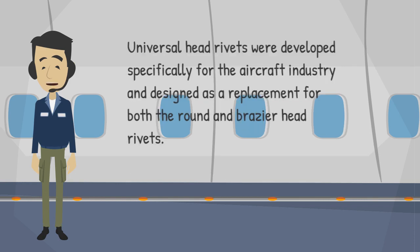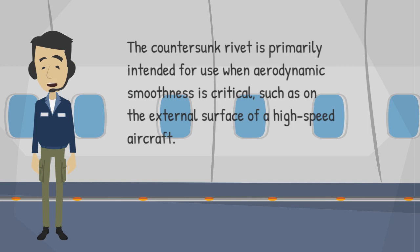Universal head rivets were developed specifically for the aircraft industry and designed as a replacement for both the round and brazier head rivets. The countersunk rivet is primarily intended for use when aerodynamic smoothness is critical, such as on the external surface of a high-speed aircraft.